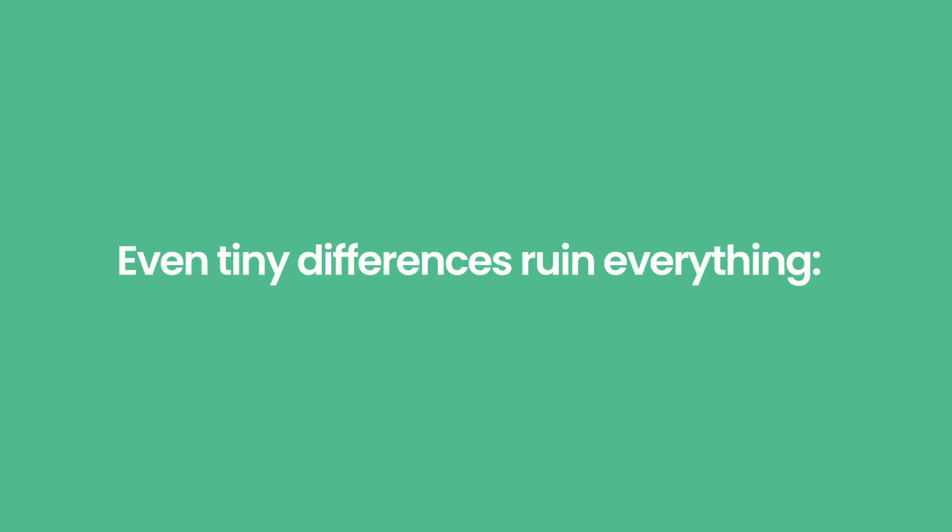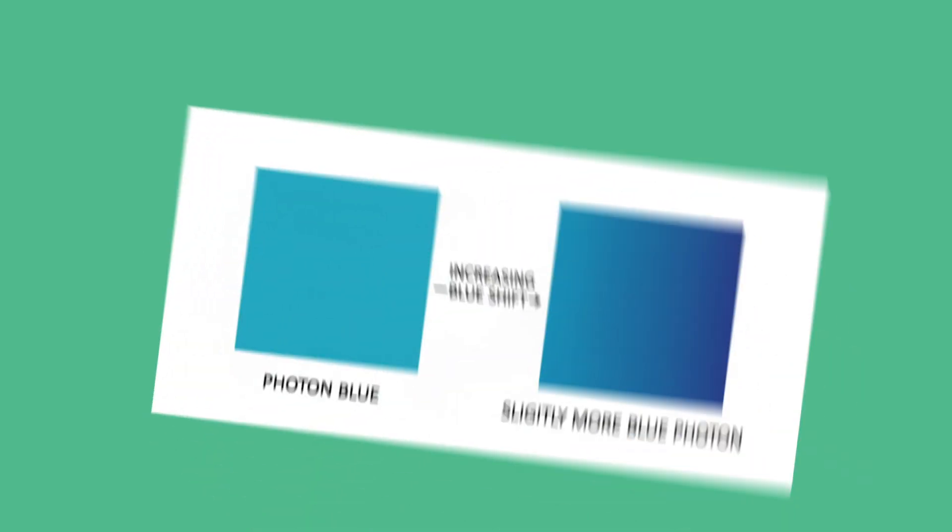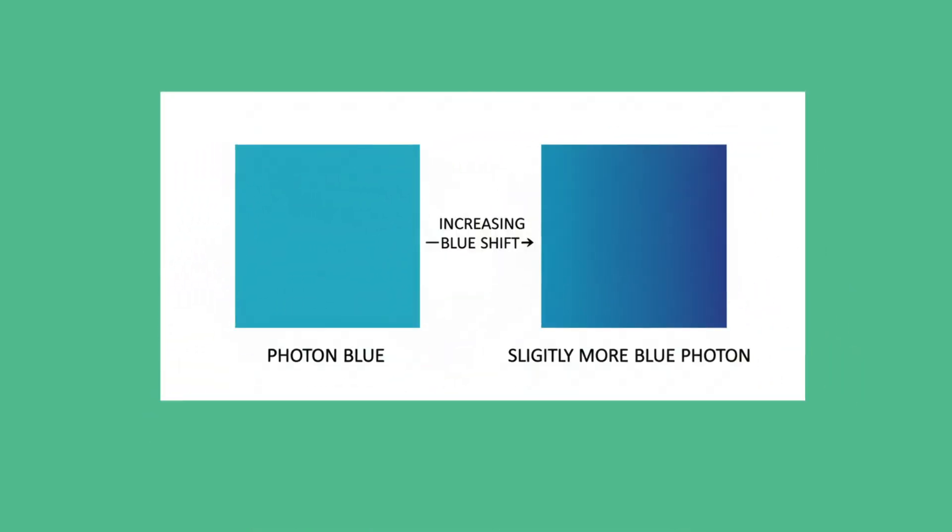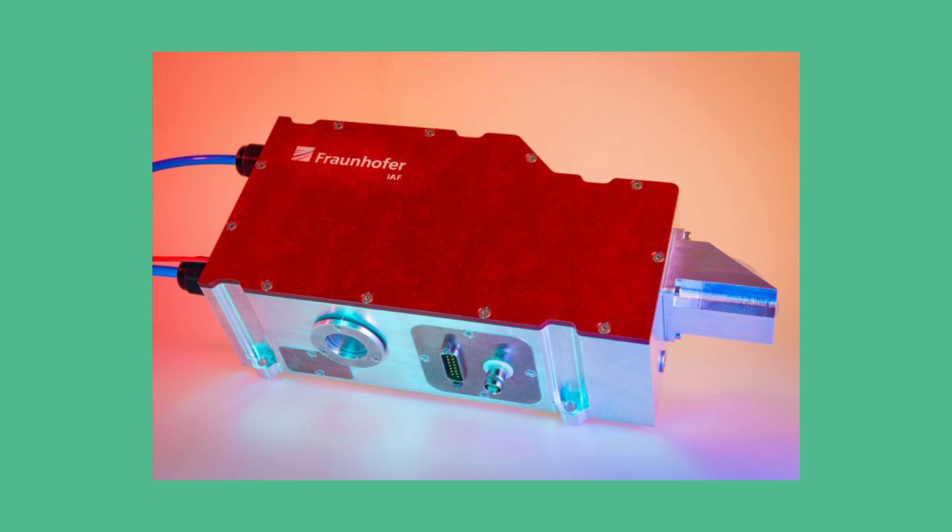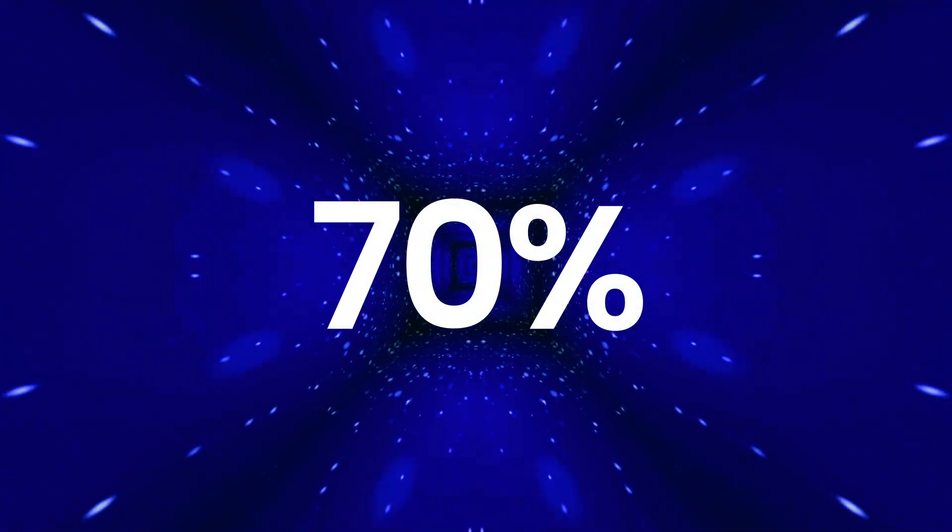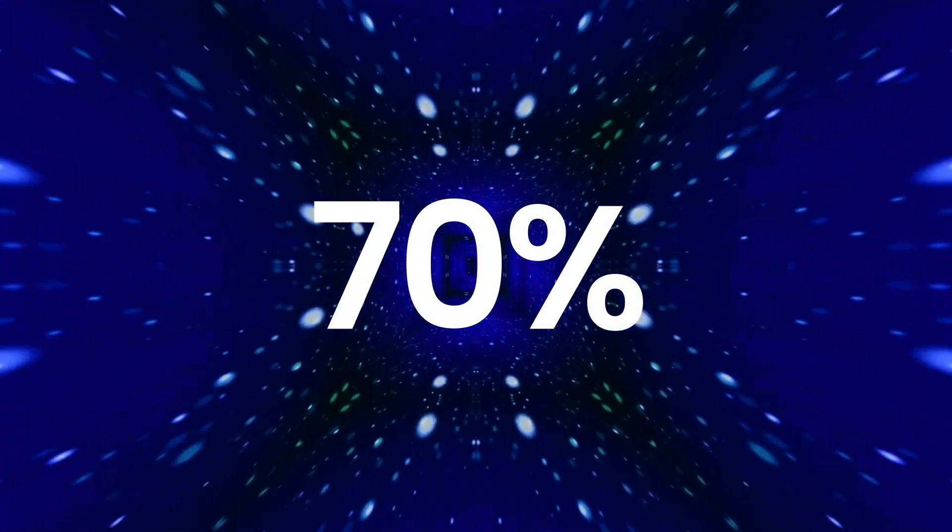Even tiny differences ruin everything. If one photon is slightly bluer than the other, or arrives a billionth of a second earlier, or has a slightly different shape, teleportation fails. To fix this, they used quantum frequency converters, next-level devices that tune the photons until they match perfectly. It's like auto-tuning photons the way music producers auto-tune a singer's voice. The result? A teleportation success rate of just over 70%, which is already insanely good for such a brutal experiment.